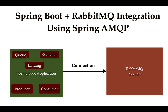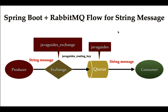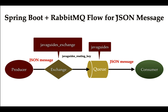You'll learn how to use a message of type String for communication between producer and consumer using a RabbitMQ broker in a Spring Boot application. Next, you'll learn how to use a message of type JSON — which is what we use in real-time projects — for communication between producer and consumer using RabbitMQ.